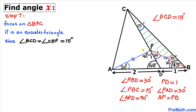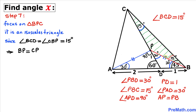Now let's focus on triangle BPC. This is an isosceles triangle since angle BCD and angle CBP are both 15 degrees each. Therefore we conclude that side length BP and side length CP are equal.